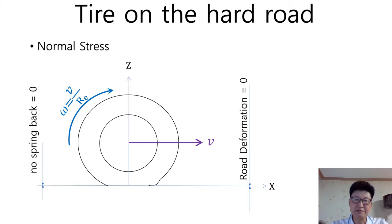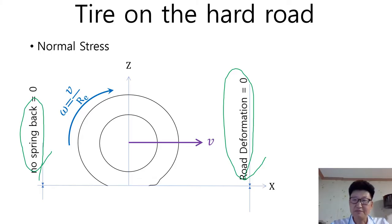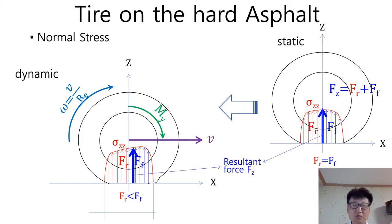For simplicity, let's assume the road is hard enough not to permit any deformation. Therefore, road deformation equals zero and there is no spring-back of the road — hard asphalt and concrete have similar conditions. Now we can focus on only tire deformation. The normal stress distribution is symmetric with respect to the YZ plane in a standstill tire, meaning the distribution has the same quantity in both the preceding and following contact patch.